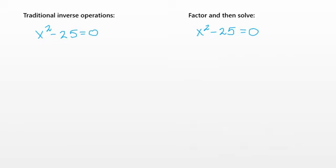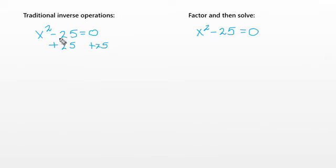We're going to look at one equation and how we can solve it using the traditional inverse operations method versus the factoring method. Using inverse operations, we need to add 25 to both sides of the equation. Negative 25 plus 25 equals 0, so on the left side we're left with x squared equals 25.